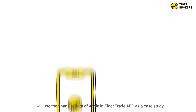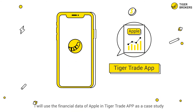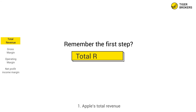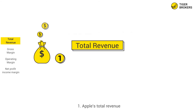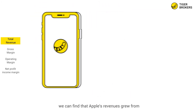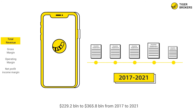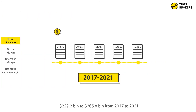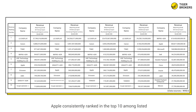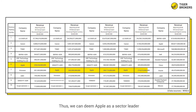Next, I'll use Apple's financial data in the Tiger Trade app as a case study. On the Tiger Trade app, we can find that Apple's revenue grew from 229.2 billion US dollars to 365.8 billion dollars from 2017 to 2021. According to Wind, Apple consistently ranked in the top 10 among listed US tech companies in terms of revenue, so we can deem Apple as a sector leader.